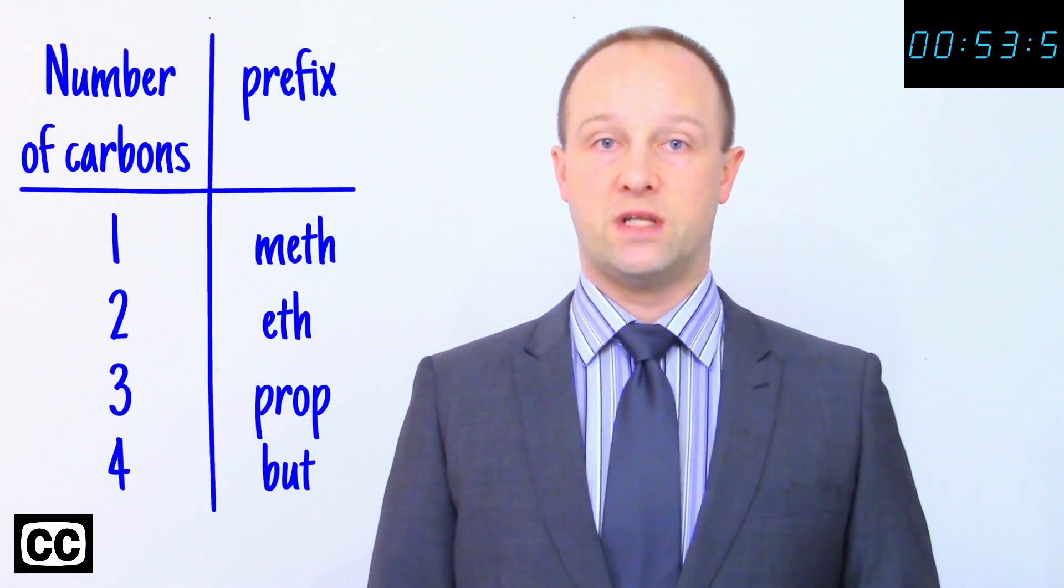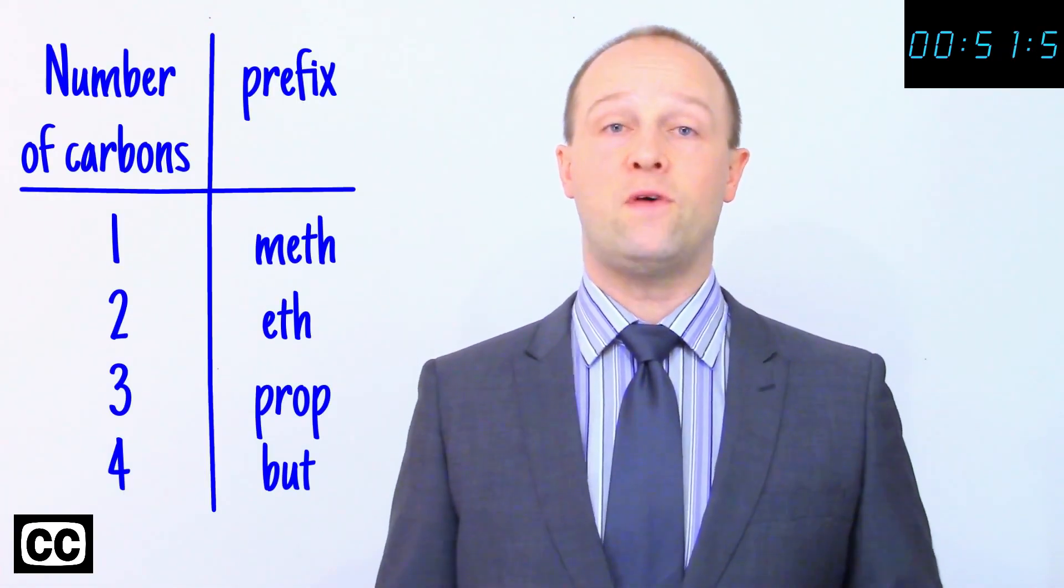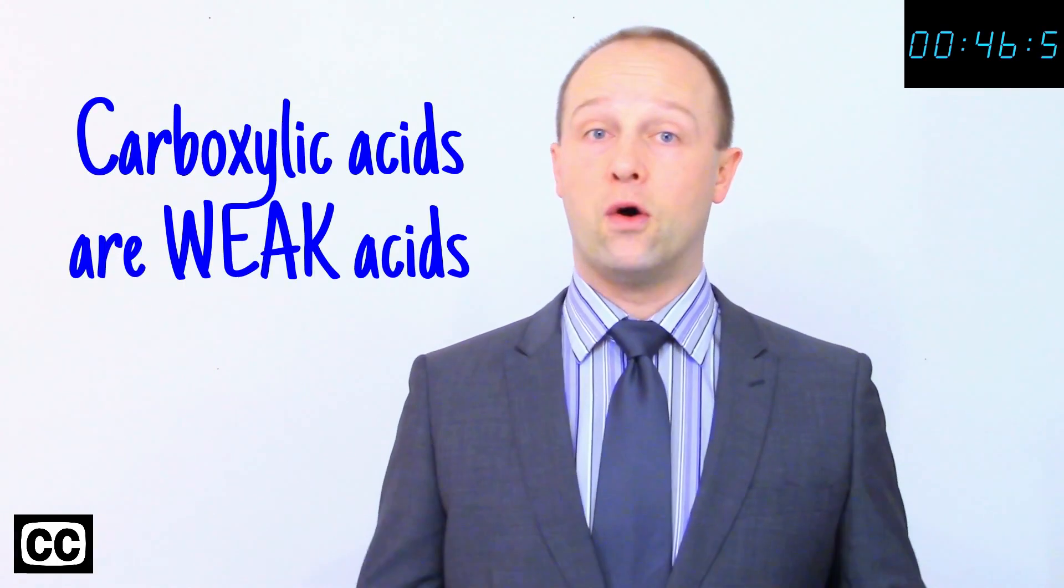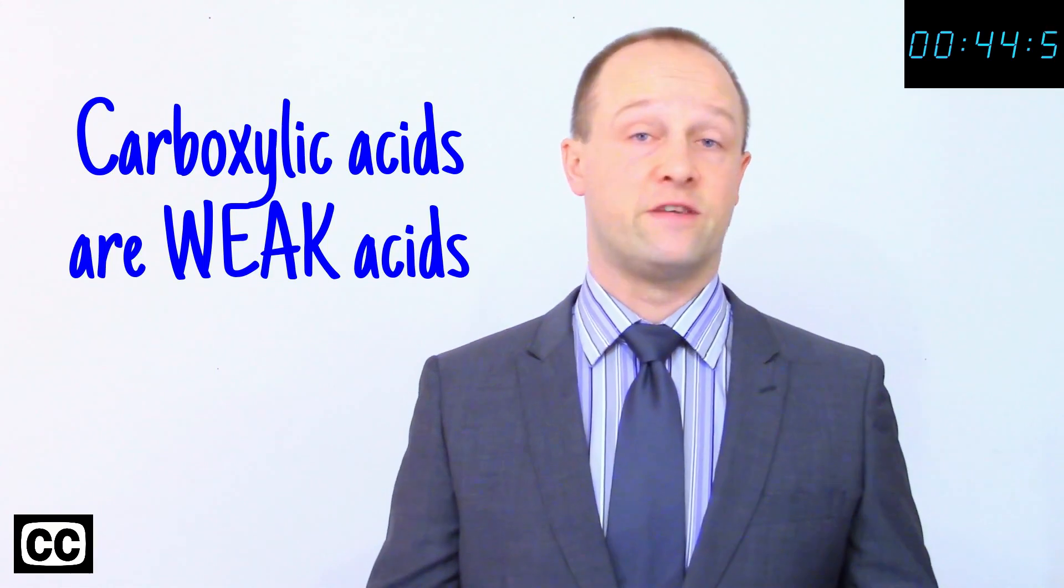They're named for the number of carbon atoms in the chain, just like with alkanes and alkenes. The four you'll see most commonly are methanoic acid, ethanoic acid, propanoic acid, and butanoic acid. They're all weak acids. For example, ethanoic acid is found in vinegar.